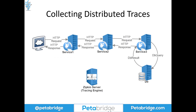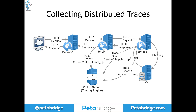Distributed tracing systems work by correlating trace and span ID numbers across each successive request inside a networked system. A trace refers to an end-to-end distributed operation — when an end user makes a request to service one, that initiates a brand new trace. A span refers to a single local operation inside one or more services. For example, in service three we have one span representing a database query. Once that span completes, the span representing the HTTP request to service three is reported as completed, and then spans complete up the chain. A tool like Zipkin might visualize this data as a histogram.